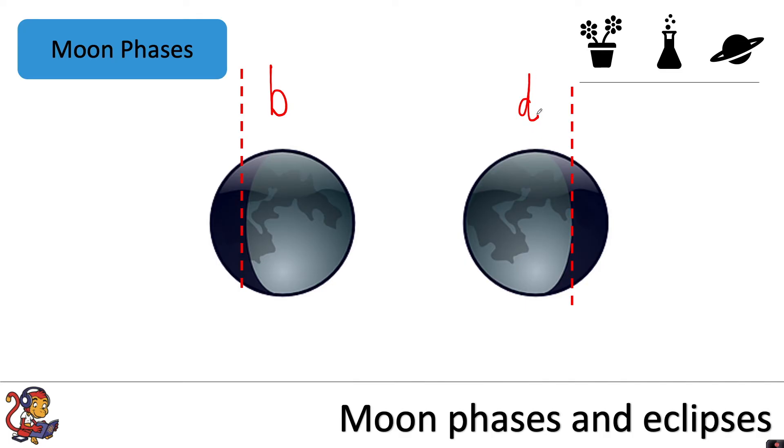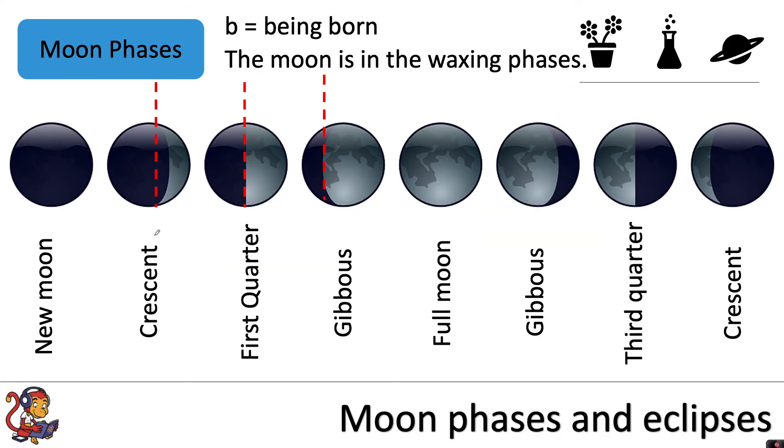So let's have a look at what that means. From the new Moon the crescent, the first quarter and the gibbous phases would look like the letter B if we were to put our imaginary line down the centre and then move it to the closest point.